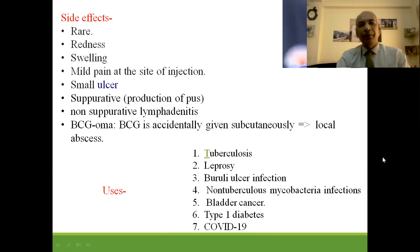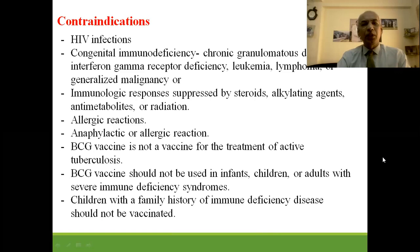BCG side effects include redness, swelling, small ulcer, mild pain, suppurative lymphadenitis, non-suppurative lymphadenitis (BCG-oma). Accidental subcutaneous injection leads to local abscess. BCG is also used for leprosy, Buruli ulcer infection, non-tuberculous mycobacterial infection, bladder cancer, type 1 diabetes, and is being trialed for COVID-19. Contraindications include HIV infection, immune deficiency, allergy, anaphylaxis, active tuberculosis, and family history of immune deficiency. BCG is stored at 2 to 8 degrees centigrade.